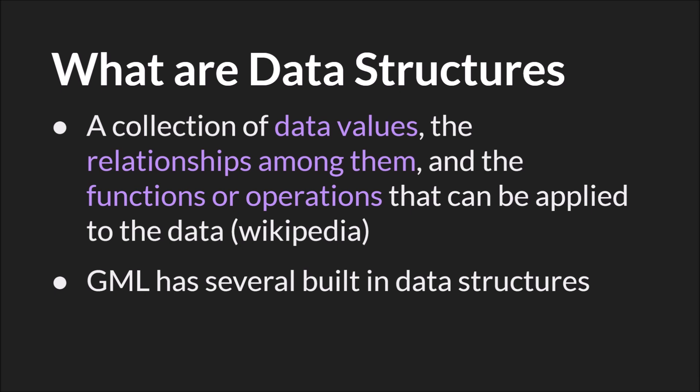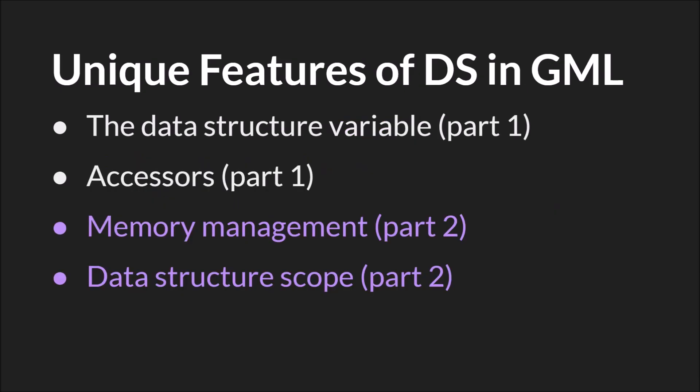A data structure is a collection of data values, the relationships between them, and the functions that you can use with that data structure. GameMaker Studio 2 has several built-in data structures. In part one, we talked about the data structure variable as well as accessors. In this part, we're going to talk about memory management and the scope of a data structure.